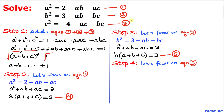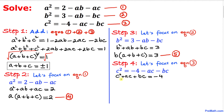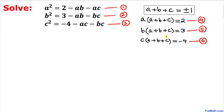Now let's focus on equation 3. Moving negative ac and negative bc to the left hand side, we can see that c is common and can be factored out, giving us c(a + b + c) = −4. Let's call this equation number 6.